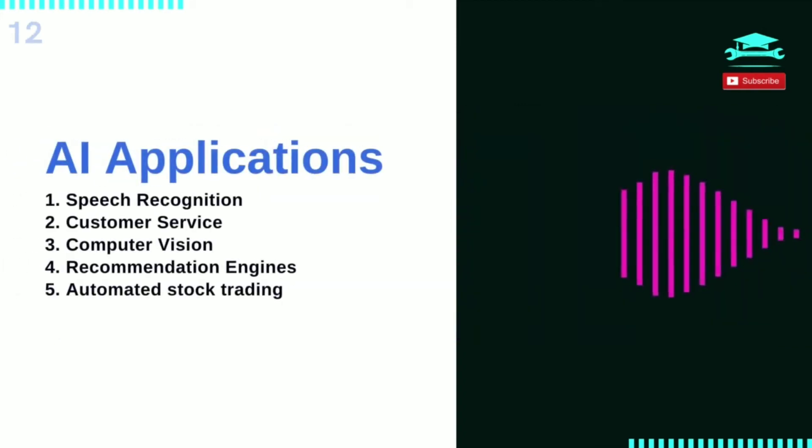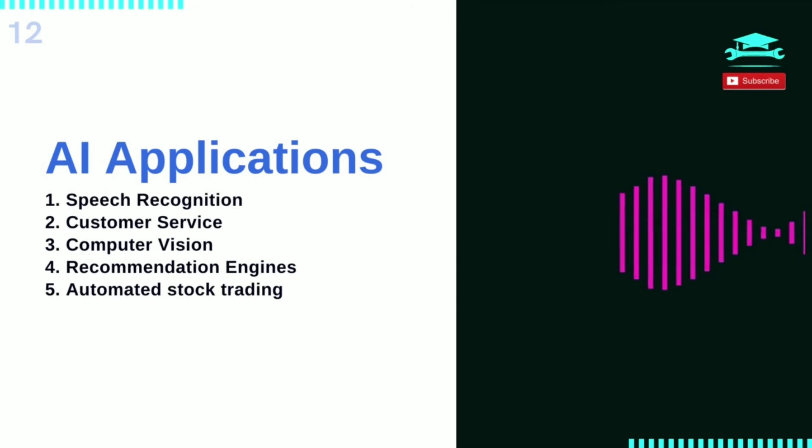There are numerous real-world applications of AI systems today. Speech recognition, also known as automatic speech recognition, computer speech recognition, or speech-to-text, is a capability which uses natural language processing to process human speech into a written format. Many mobile devices incorporate speech recognition into their systems to conduct voice search or provide more accessibility around texting.